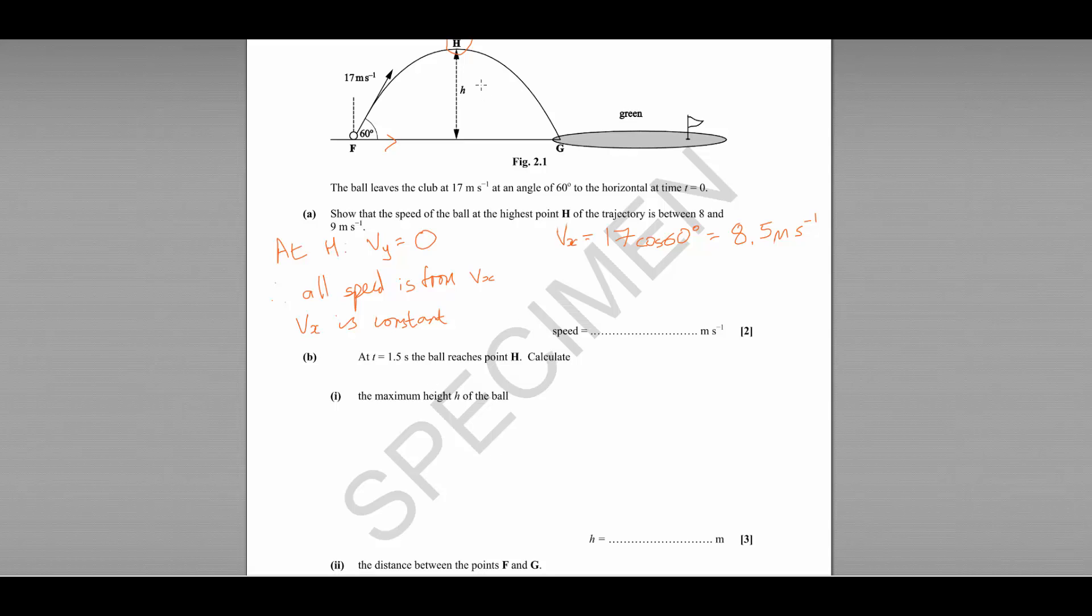Part B tells us that the ball reaches point H at T equals 1.5 seconds. So we need to calculate the maximum height of the ball. Since we're interested in the maximum height, we're going to consider the vertical motion only.